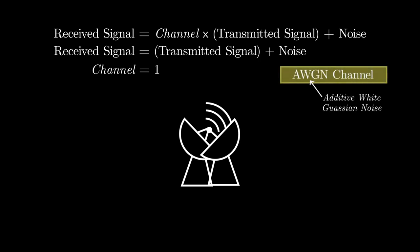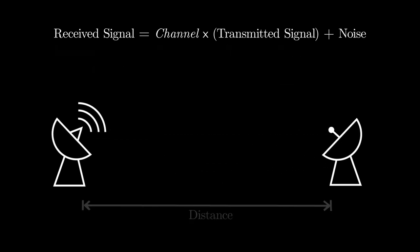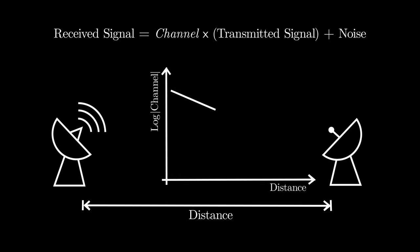Next, assume that the receiver is at a distance from the transmitter. Then the channel is determined by the distance. Higher the distance, lower the channel value.